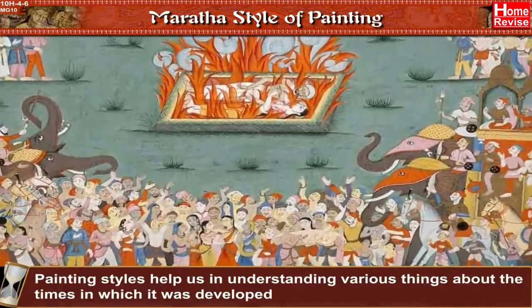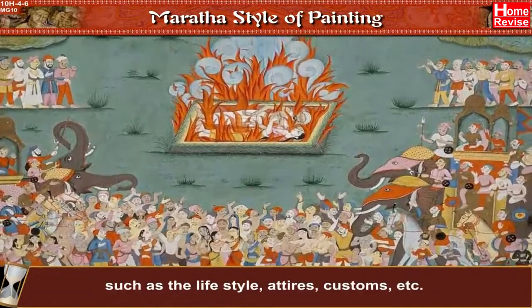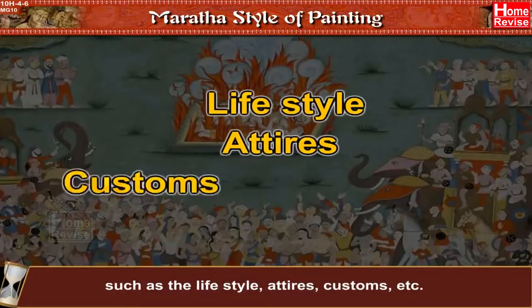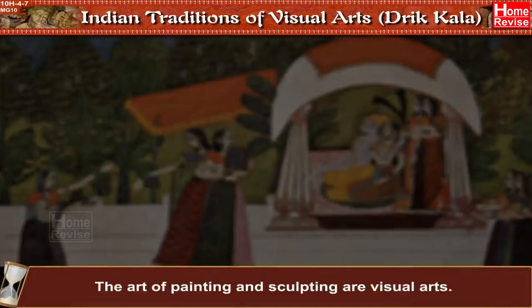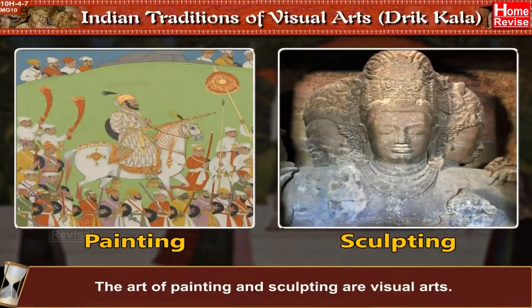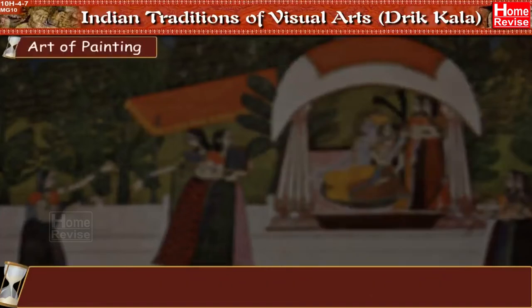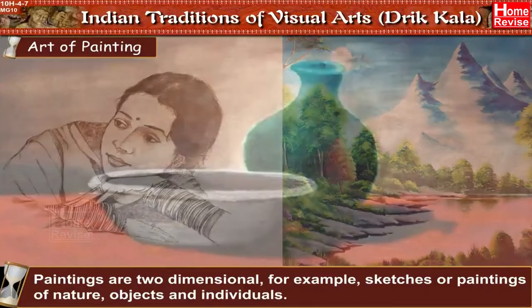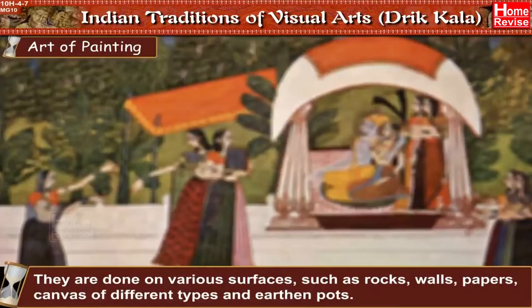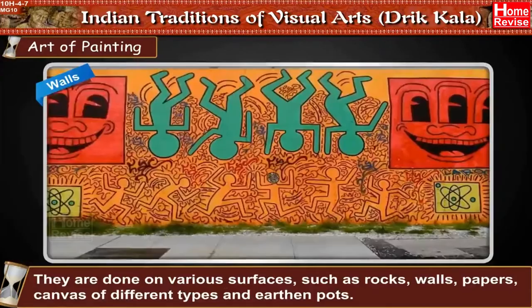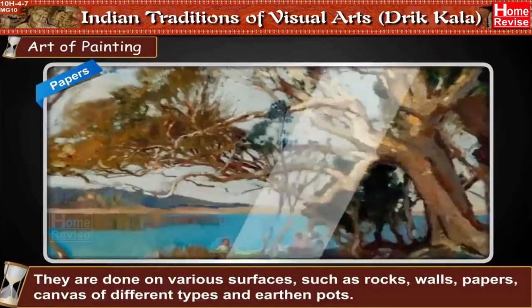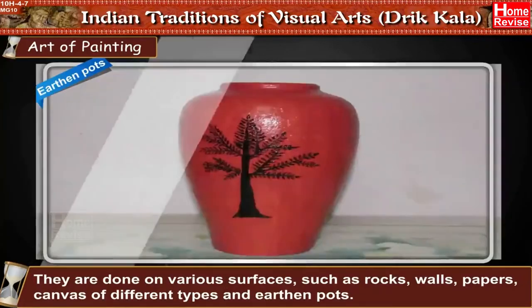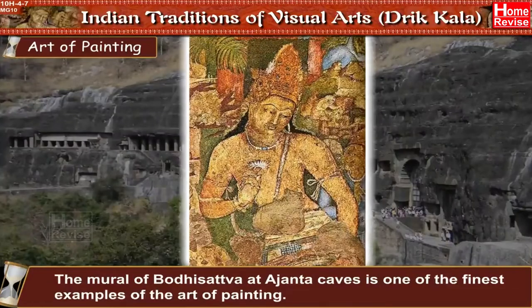Painting styles help us understand various things about the times in which they were developed, such as the lifestyle, attires, and customs. In Indian traditions of visual arts (Drikk Kala), the art of painting deals with two-dimensional works — for example, sketches or paintings of nature, objects, and individuals — done on various surfaces such as rocks, walls, papers, canvas, and earthen pots. The mural of Bodhisattva at Ajanta Caves is one of the finest examples of the art of painting.